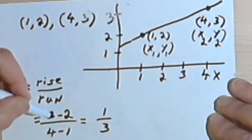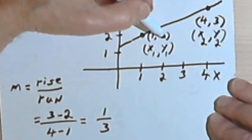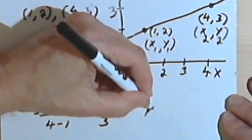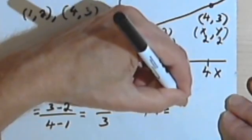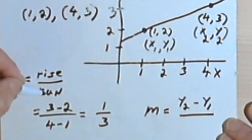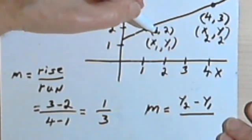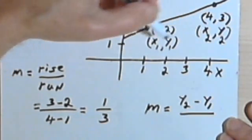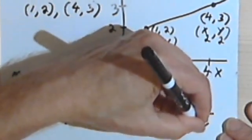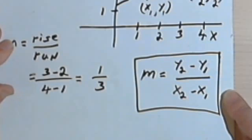Now what I did when I wanted to find the rise was, you remember, I took this 3 and subtracted 2. So in other words, I took the y sub 2 and subtracted the y sub 1. So another way to talk about the slope would be to say that the rise is y sub 2 minus y sub 1. Now when I wanted to get the run, the denominator for this fraction, I took the 4 and subtracted 1, which is the same as saying I took the x sub 2 and subtracted x sub 1, x sub 2 minus x sub 1. So this, then, is going to be the general formula for my slope.